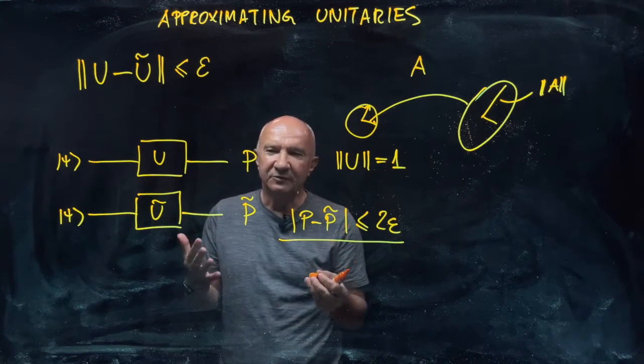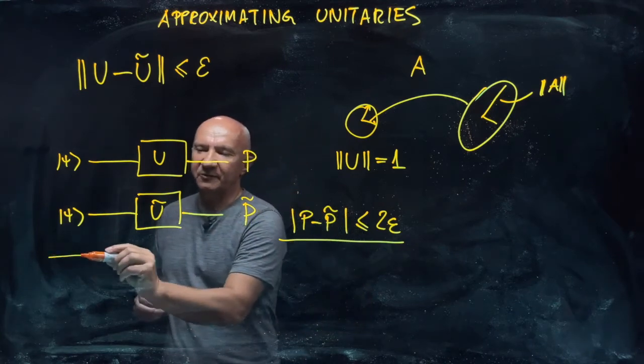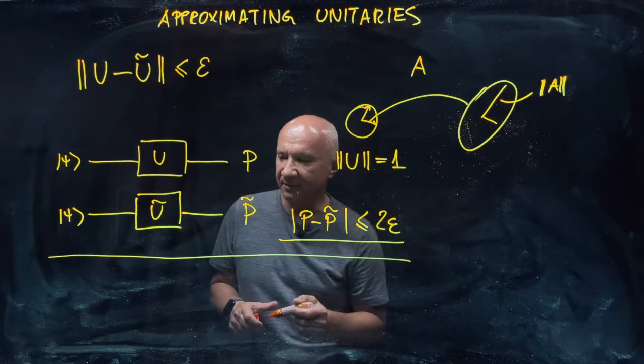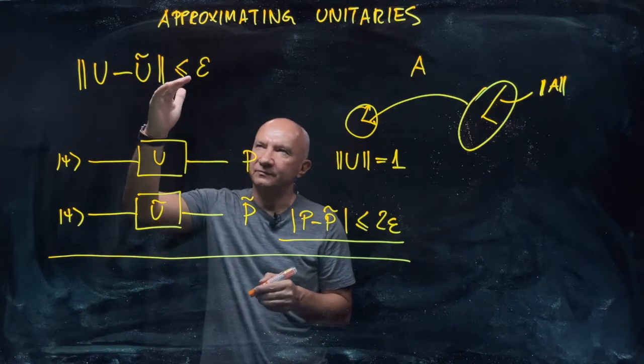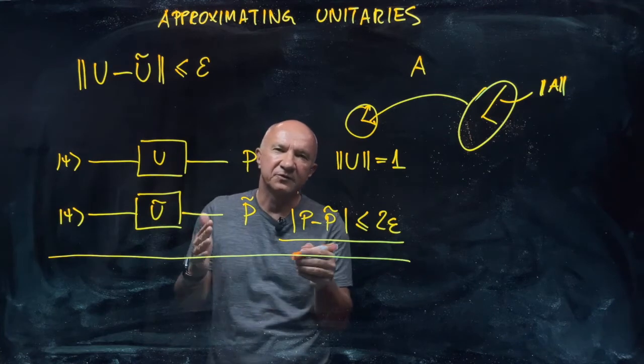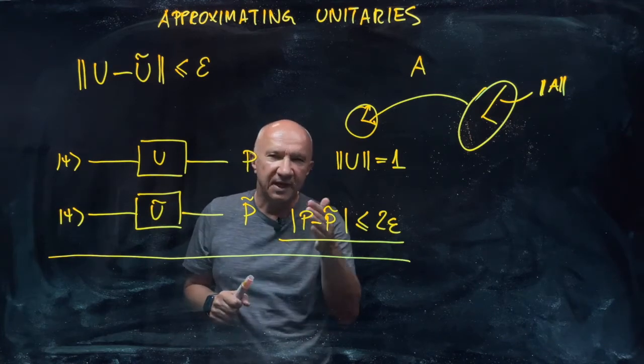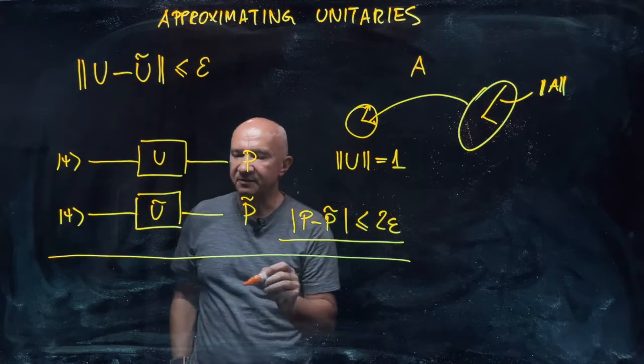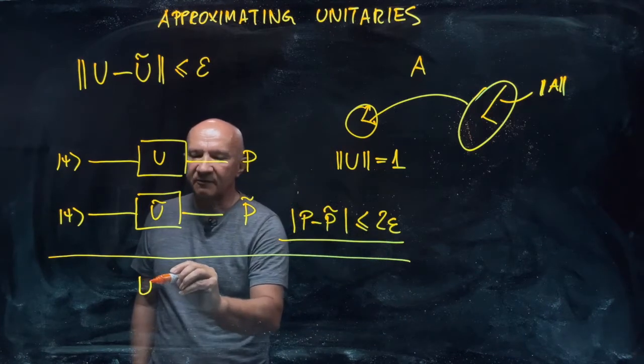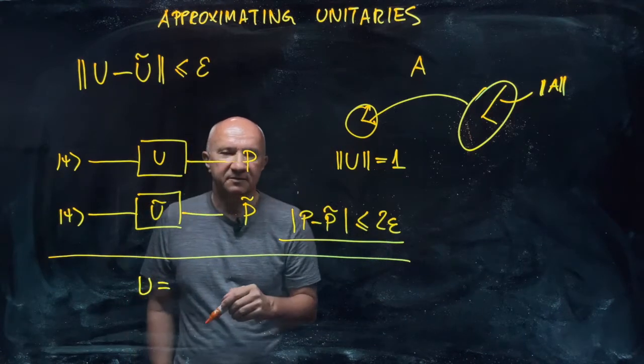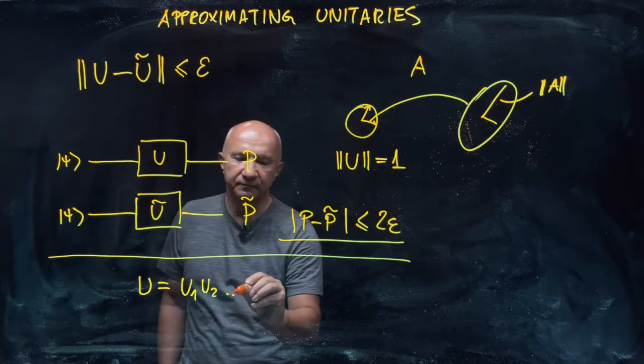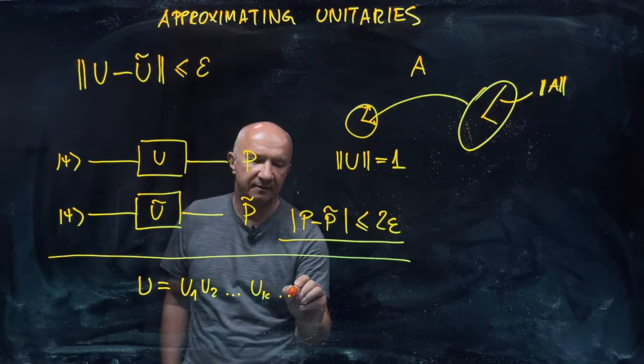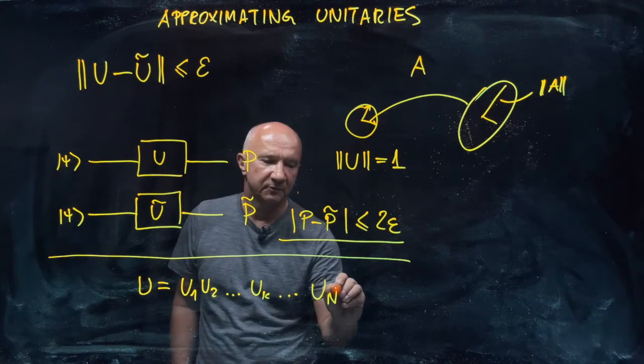One important property, apart from the physical interpretation that we are going to use, is how the precision scales when we concatenate unitaries. So imagine a situation where I have u that is constructed as a sequence of gates u1, u2, u sub k, to u capital N.